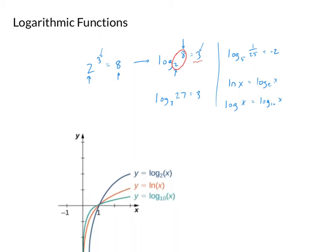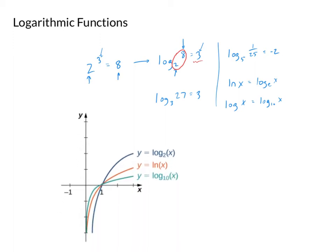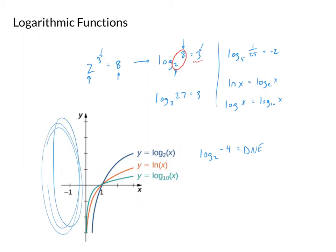A quick look at graphs of log functions. We have log base 2, natural log, and log base 10 shown. The log function exists purely on the right side of the y-axis — log is only defined when x is positive. When x is negative, it's not defined. That's because, for example, log base 2 of (−4): what power do you raise 2 to to get a negative answer? There is no such number — that answer does not exist. That's why these graphs don't exist on the left side of the y-axis.